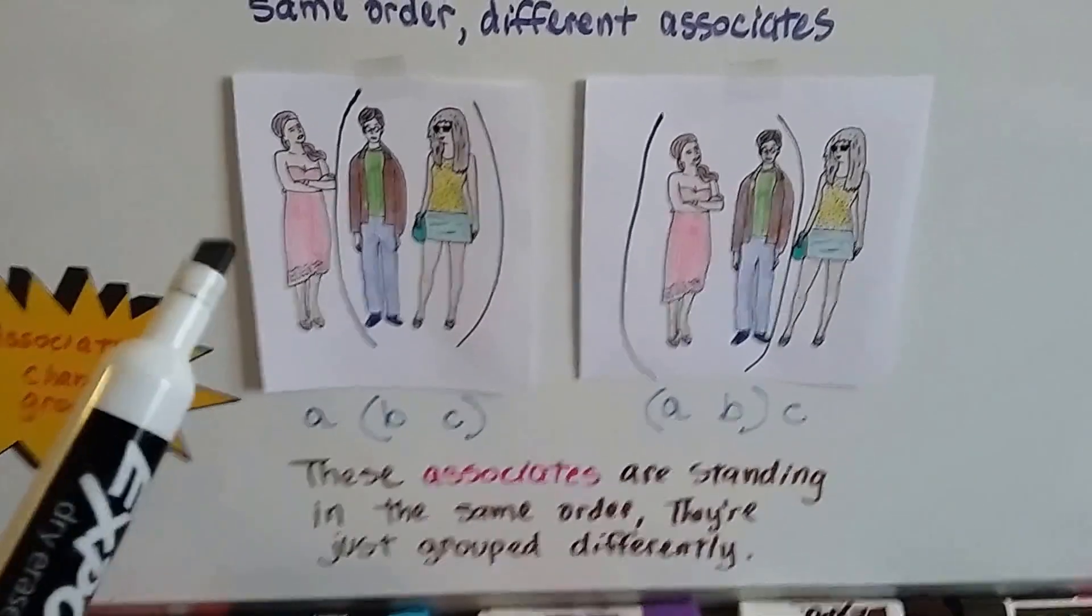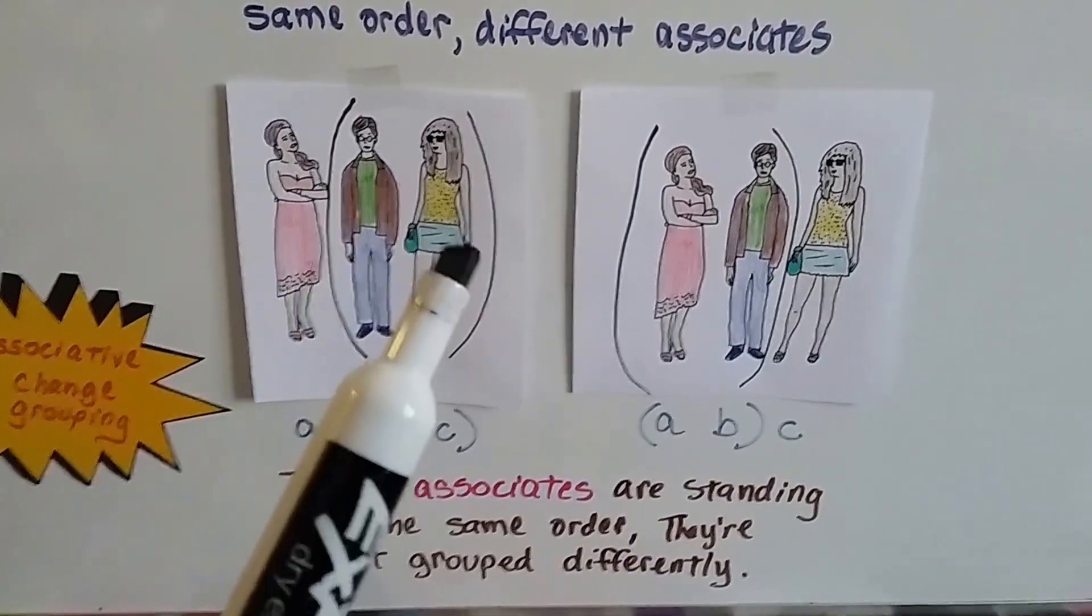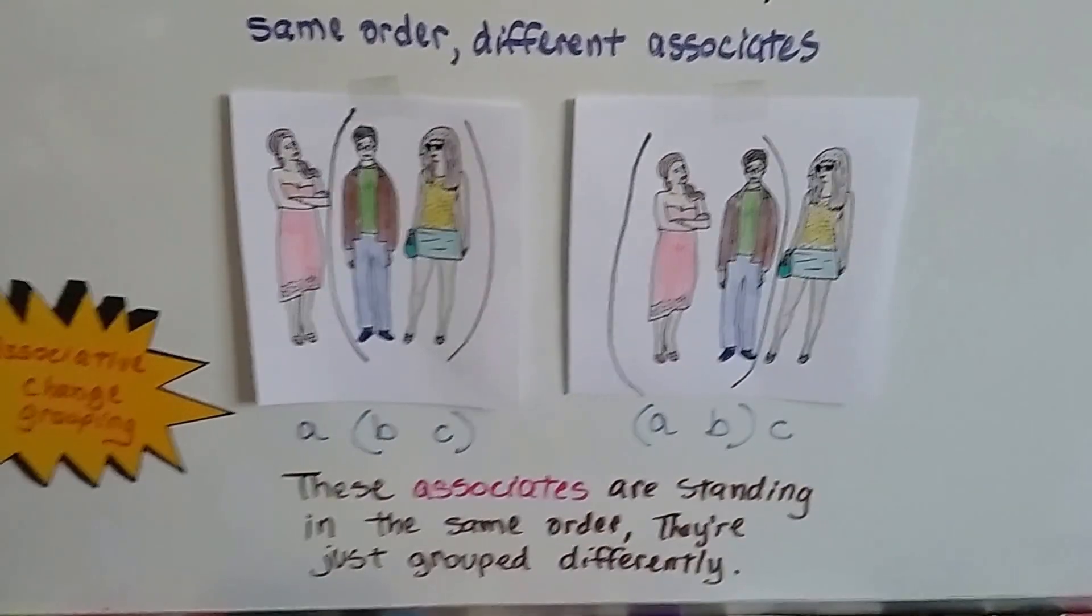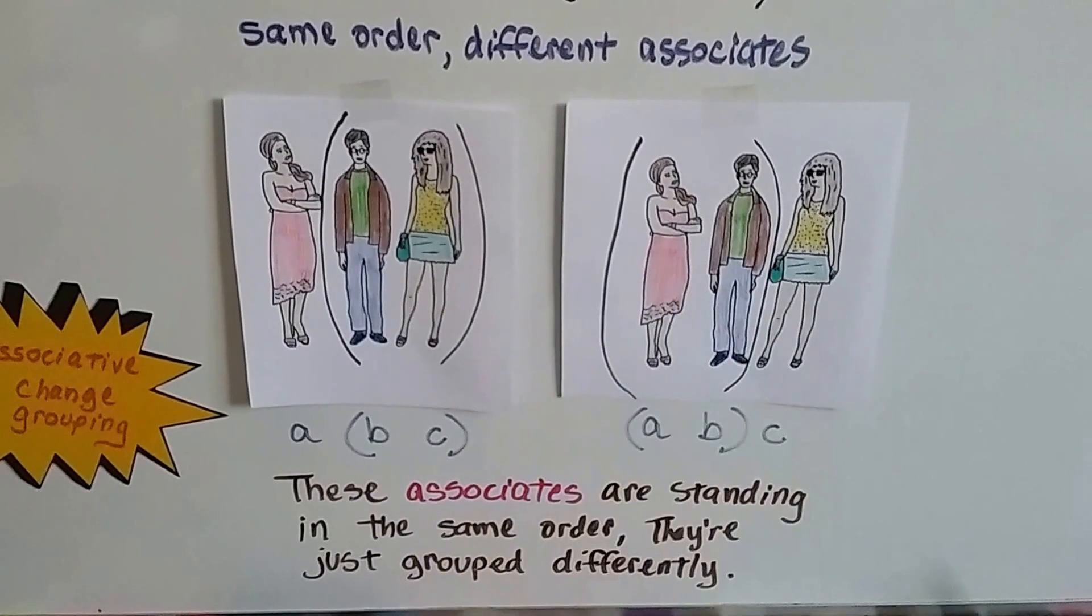So look at these people. They're in the exact same order. This lady in the dress, the guy in the brown jacket, the girl in the short skirt. Lady in the dress, guy in the brown jacket, girl in the short skirt. They're in the same order. We're just grouping them differently.